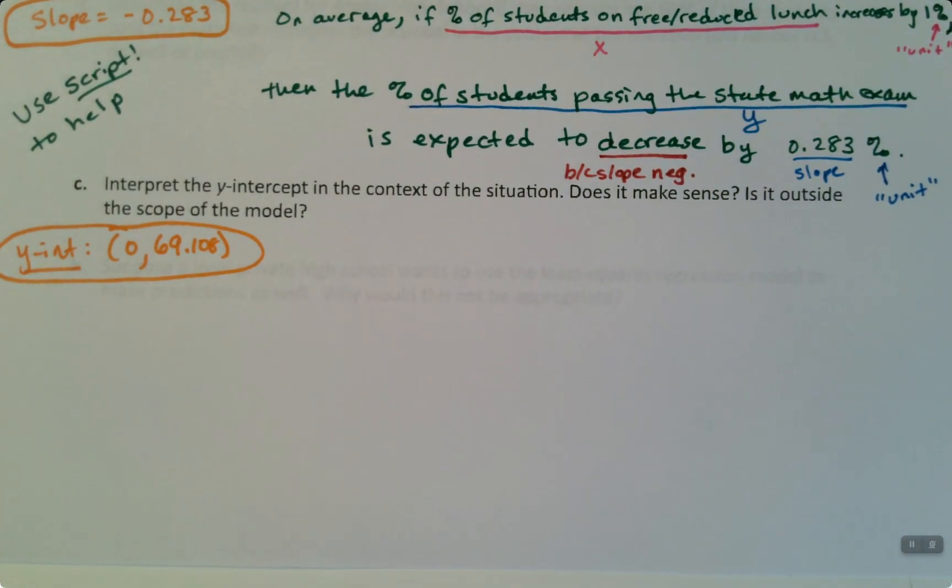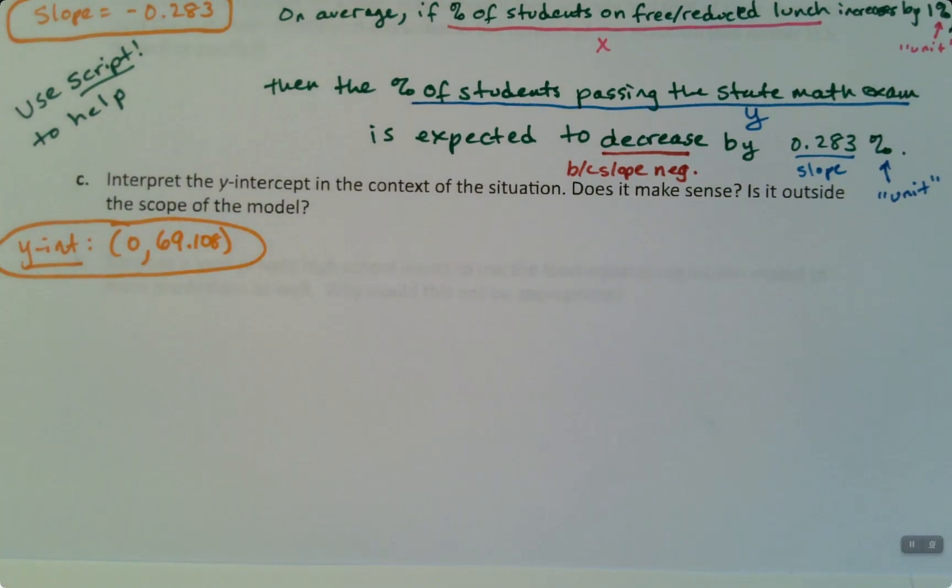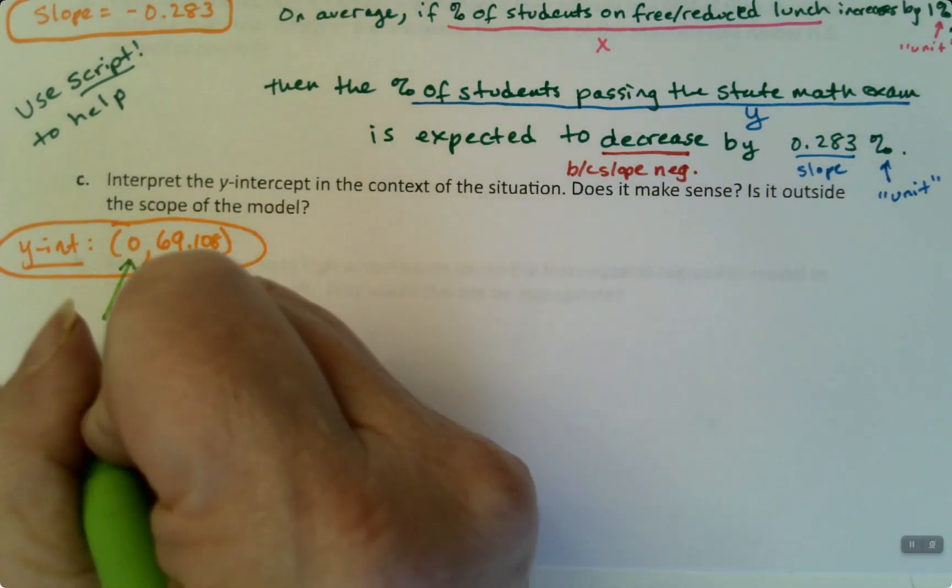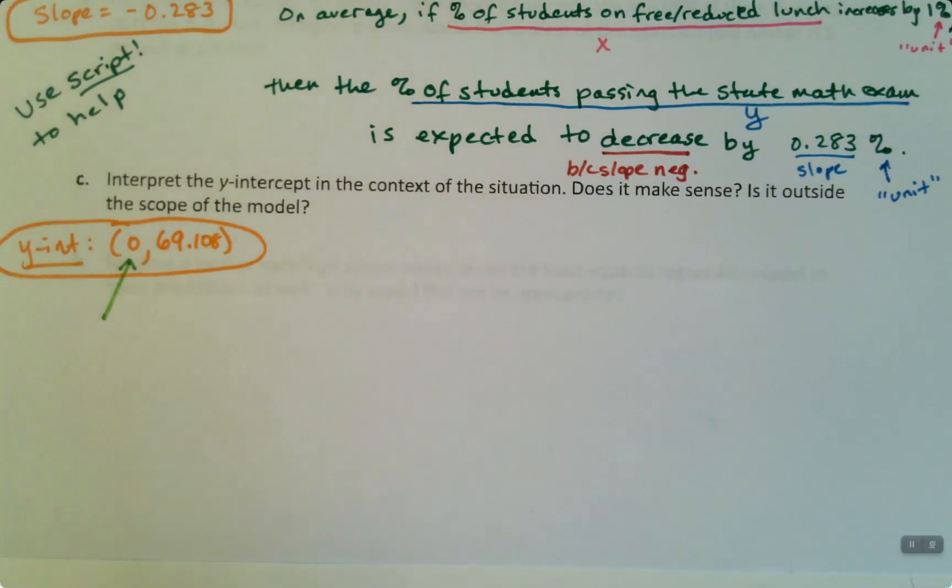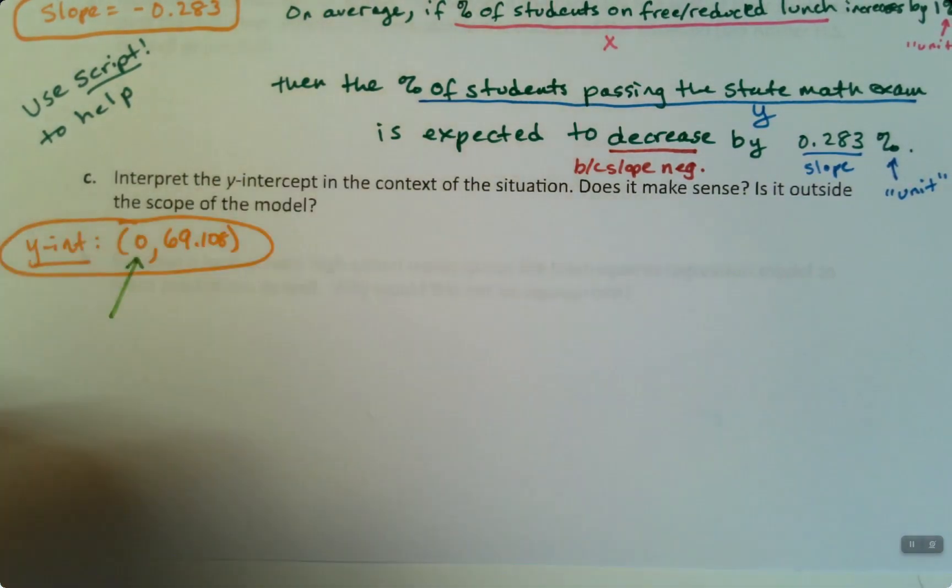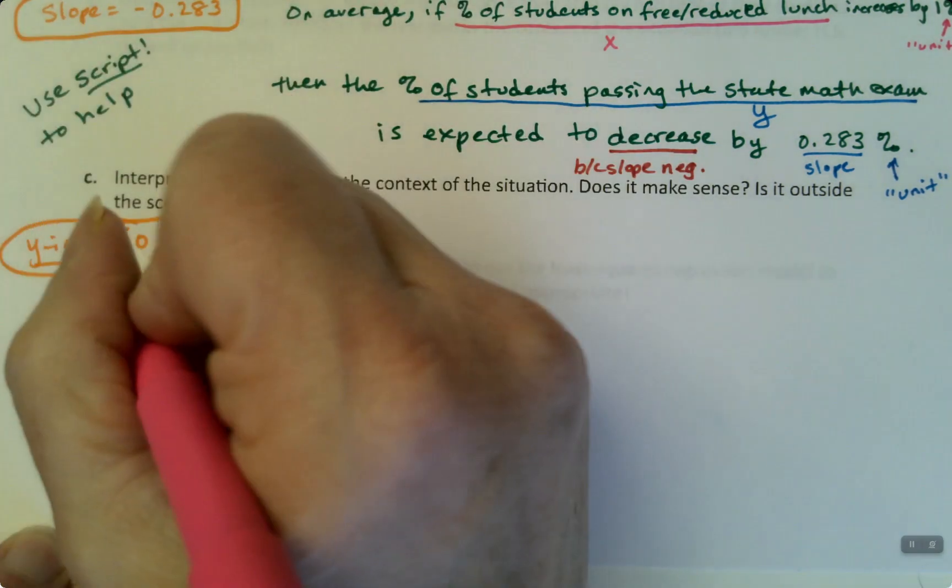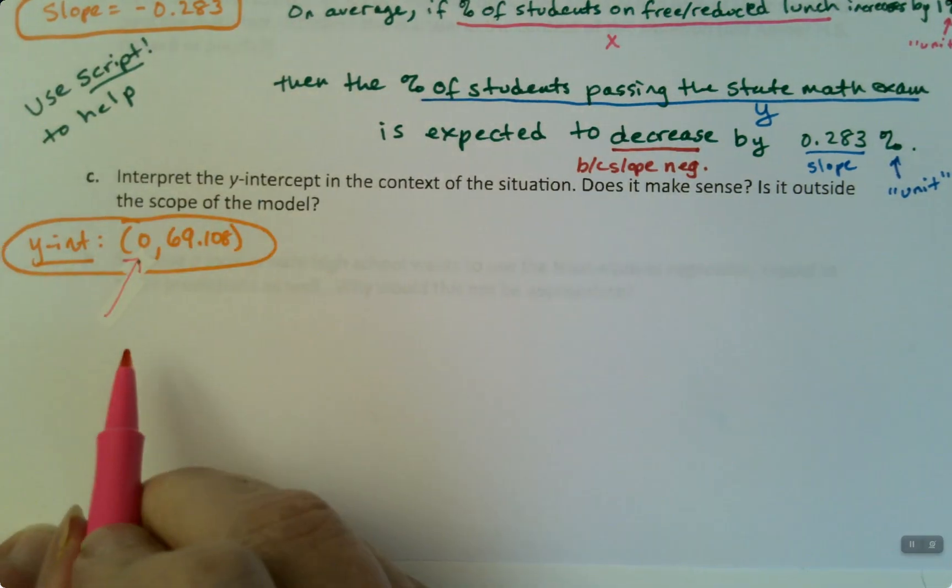All right, now let's interpret the Y-intercept in the context of the situation. Does it make sense, or is it outside the scope of the model? Okay, well, the Y-intercept is always, always zero comma, and this is the thing a lot of students forget. But that's the thing you really have to pay attention to. I'll stick with my color coding here. So if X is zero, and that usually is the problem.